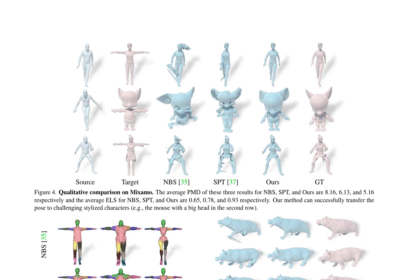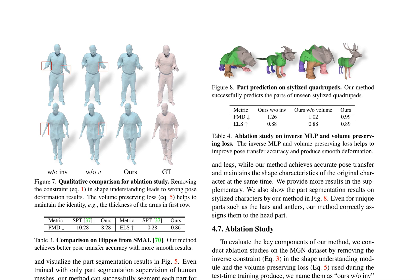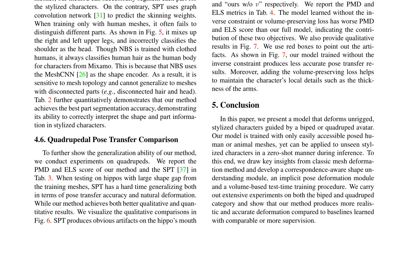The presented research focuses on developing a model capable of deforming unrigged, stylized characters guided by biped or quadruped avatars. The model is trained with posed human or animal meshes and can be applied to unseen stylized characters in a zero-shot manner. Key components include a correspondence-aware shape understanding module, an implicit pose deformation module, and a volume-based test-time training procedure. The method achieves better pose transfer accuracy and more realistic deformation compared to baseline models, as demonstrated through extensive experiments on both biped and quadruped categories. Ablation studies highlight the importance of the inverse constraint and volume-preserving loss in maintaining pose accuracy and local details, and the method's ability to accurately segment parts even in challenging characters is also showcased.